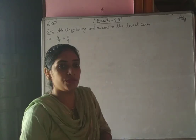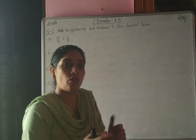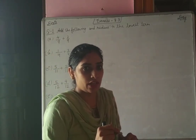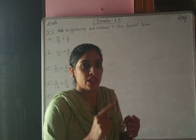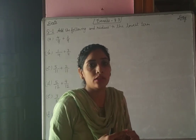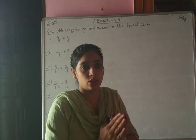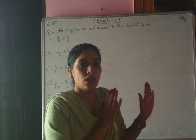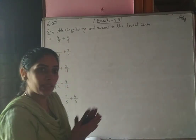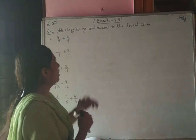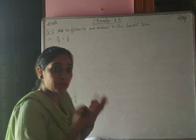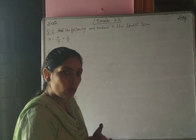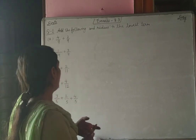Now next is Exercise 8.3. In this, we have to learn how to add and subtract fractions. To add and subtract fractions, the method is the same as when we arrange in ascending and descending order — firstly we convert them into like fractions. Same method is used when you add or subtract: you first have to convert them into like fractions.